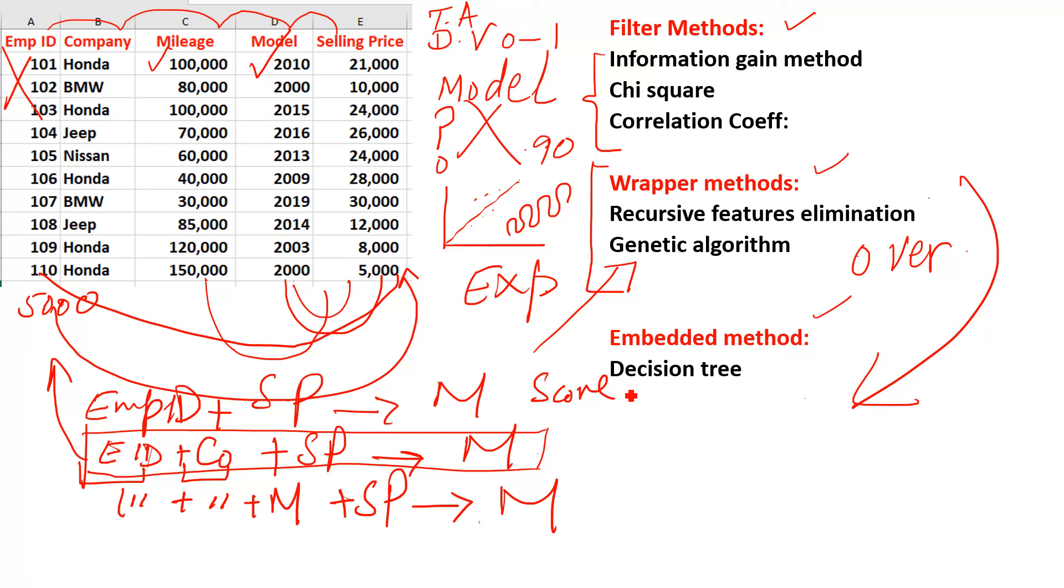Then we will move to the embedded method. In embedded method we have decision tree, which we discussed in our Python lesson. Quickly I will explain, but this is the recommended method. Here it is less expensive and we do not have too much overfitting. Still we have overfitting but not too much compared to wrapper method.